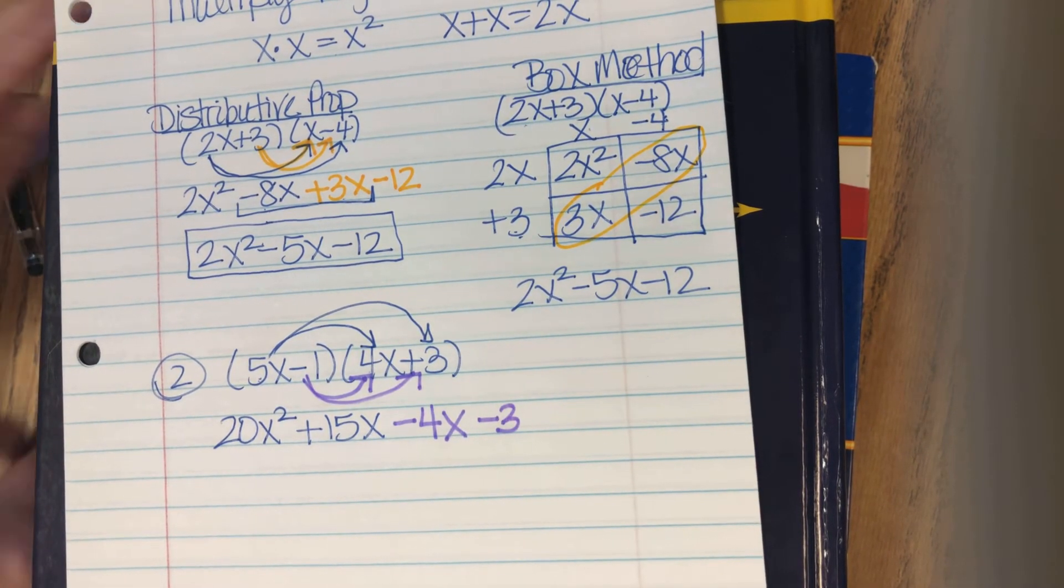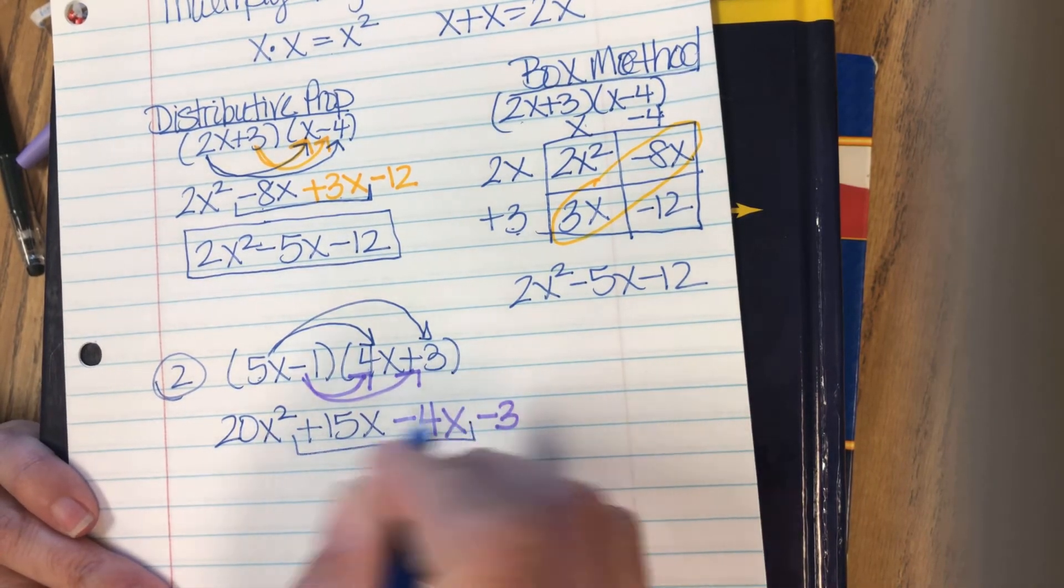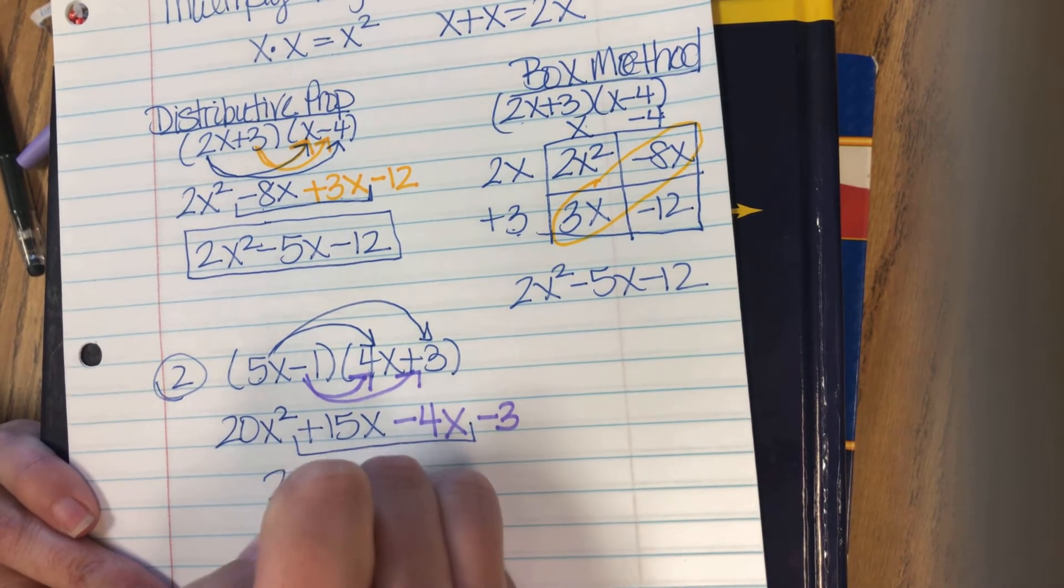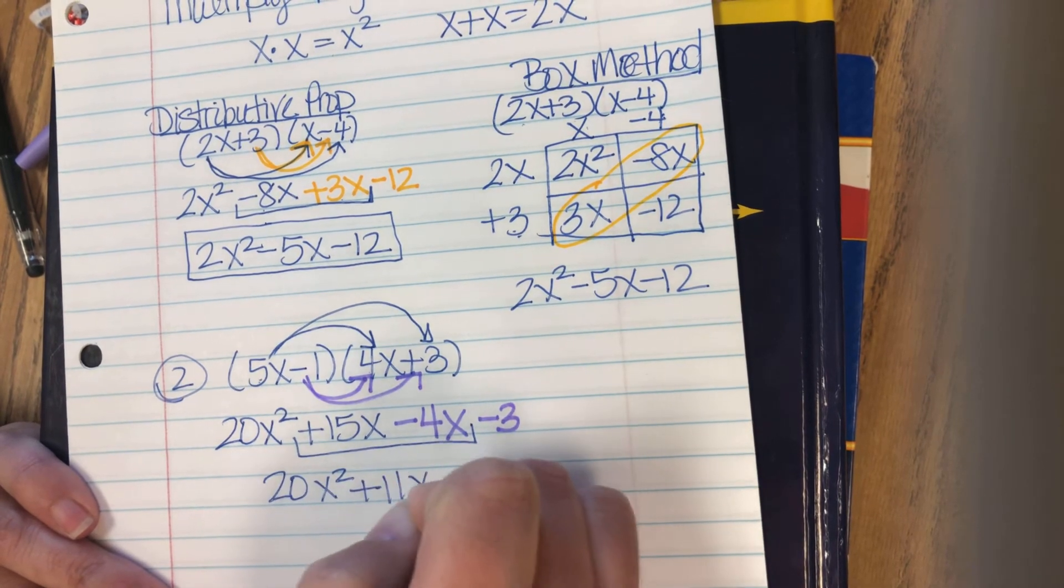Then we look for our like terms. That's the 15x minus 4x. And we get 20x squared plus 11x minus 3.